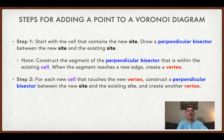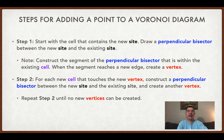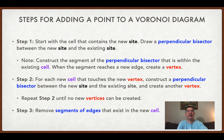That vertex is going to be touching a new cell, and so we are going to create a new perpendicular bisector starting at that vertex between the new site and the existing site in that cell, and create another vertex. We're going to keep doing this until we don't create any new vertices. Once we do that, we're going to remove any segments of edges that were in the existing Voronoi diagram but exist in the new cell — we don't need those parts of those edges anymore.